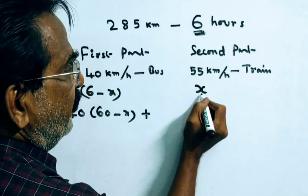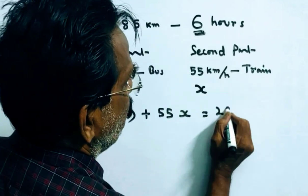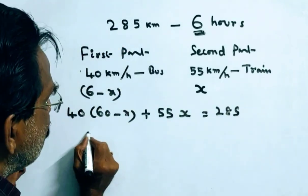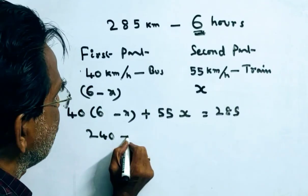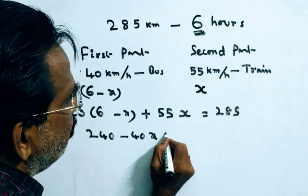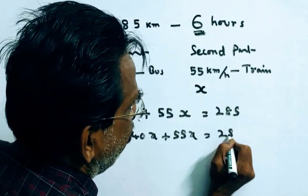And 55 into x, this is distance traveled by train. Total distance is equal to 285 km. So, 6 minus x: 240 minus 40x plus 55x is equal to 285 km.